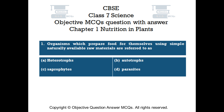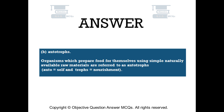The right answer is option B: autotrophs. Organisms which prepare food for themselves using simple naturally available raw materials are referred to as autotrophs. Auto means self and trophos means nourishment.